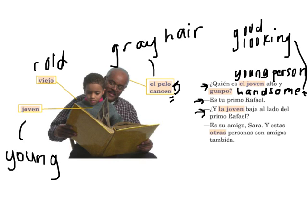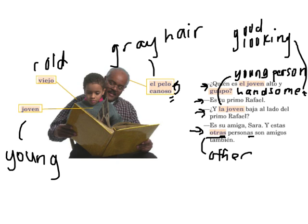And the boy asks: ¿Y la joven baja al lado del primo Rafael? — La joven would be the young woman — and the short young woman next to cousin Rafael? And he answers: that's your friend Sara. And the other people — otras personas — son amigos también. Notice that otras has adjective agreement with personas.